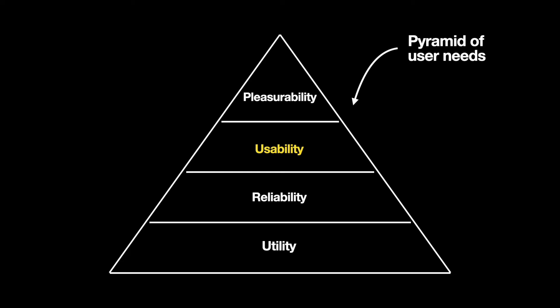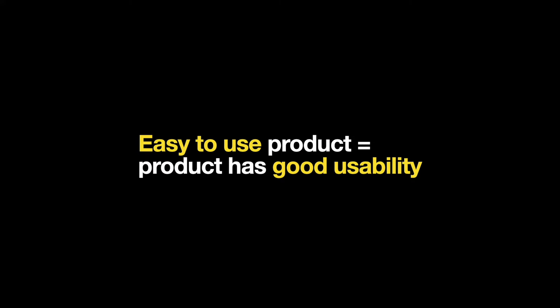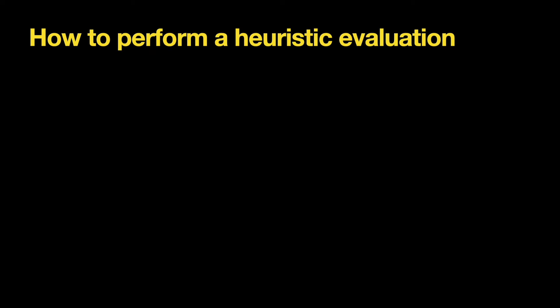Finally, pleasurability refers to any positive emotion or response that users receive from interacting with a product. When we conduct heuristic evaluation, we aim to identify usability flaws so that the team can design an easy-to-use product. The word heuristic means a rule of thumb — a very general rule or principle that applies to a wide range of user interfaces. When we talk about heuristic evaluation, we mean using a list of heuristics to check if the product satisfies them.